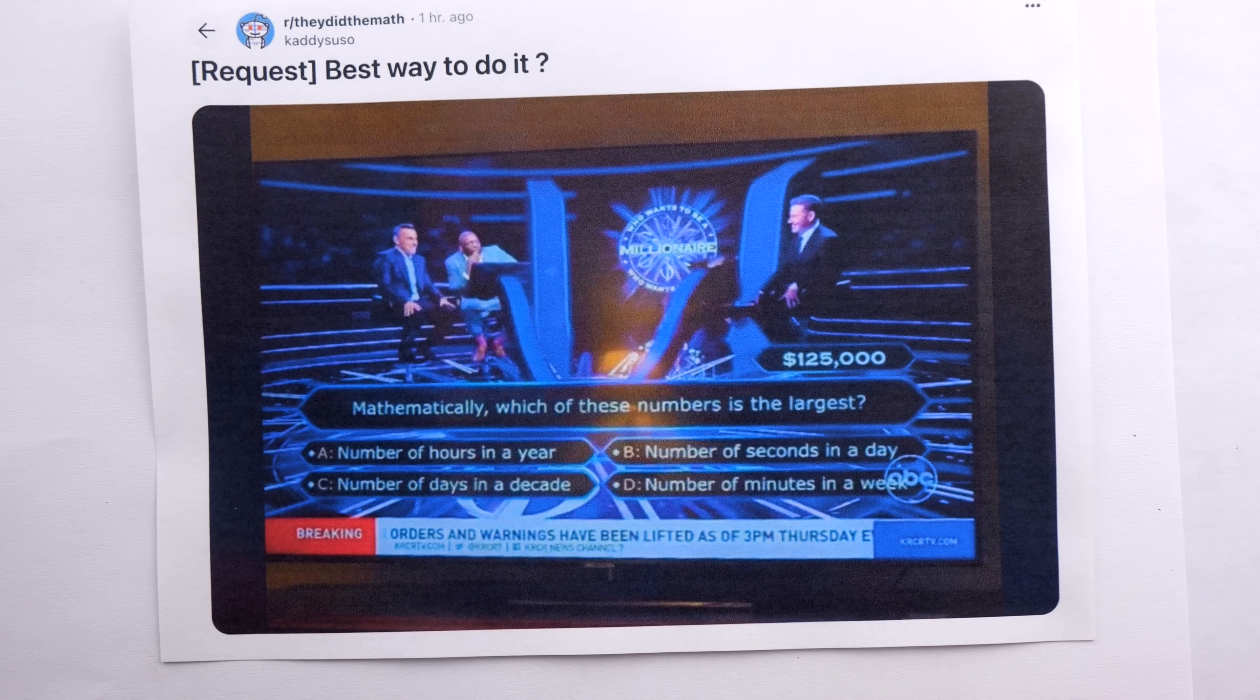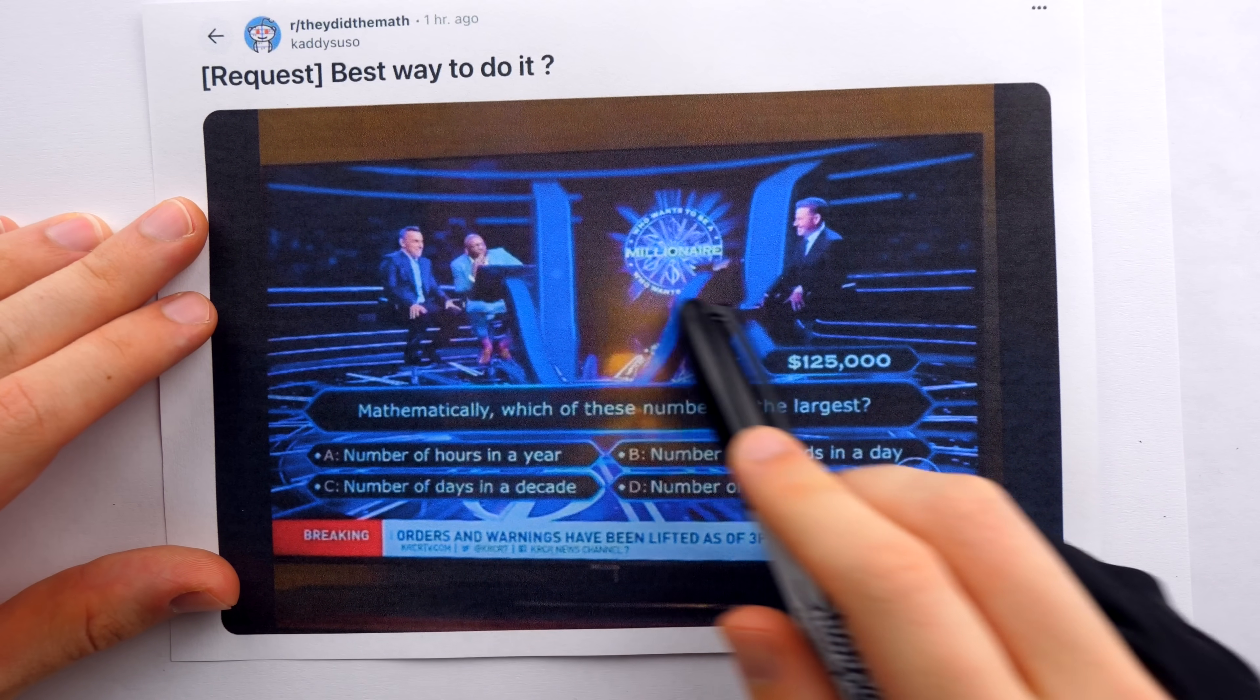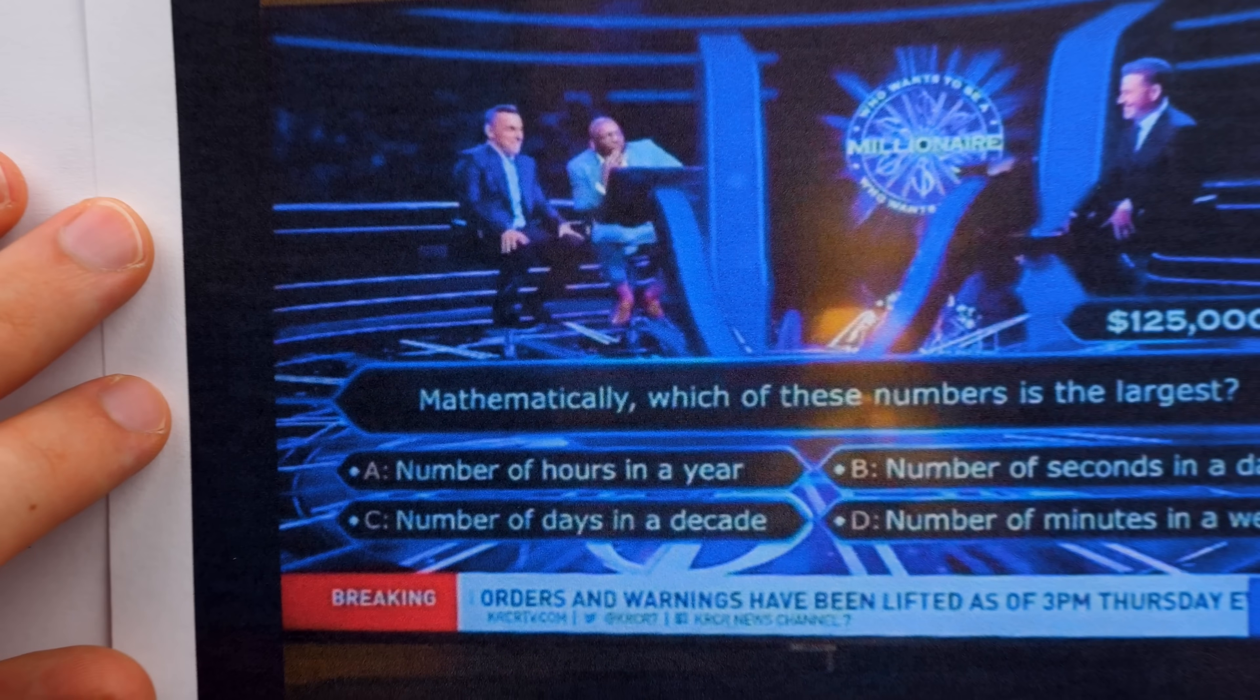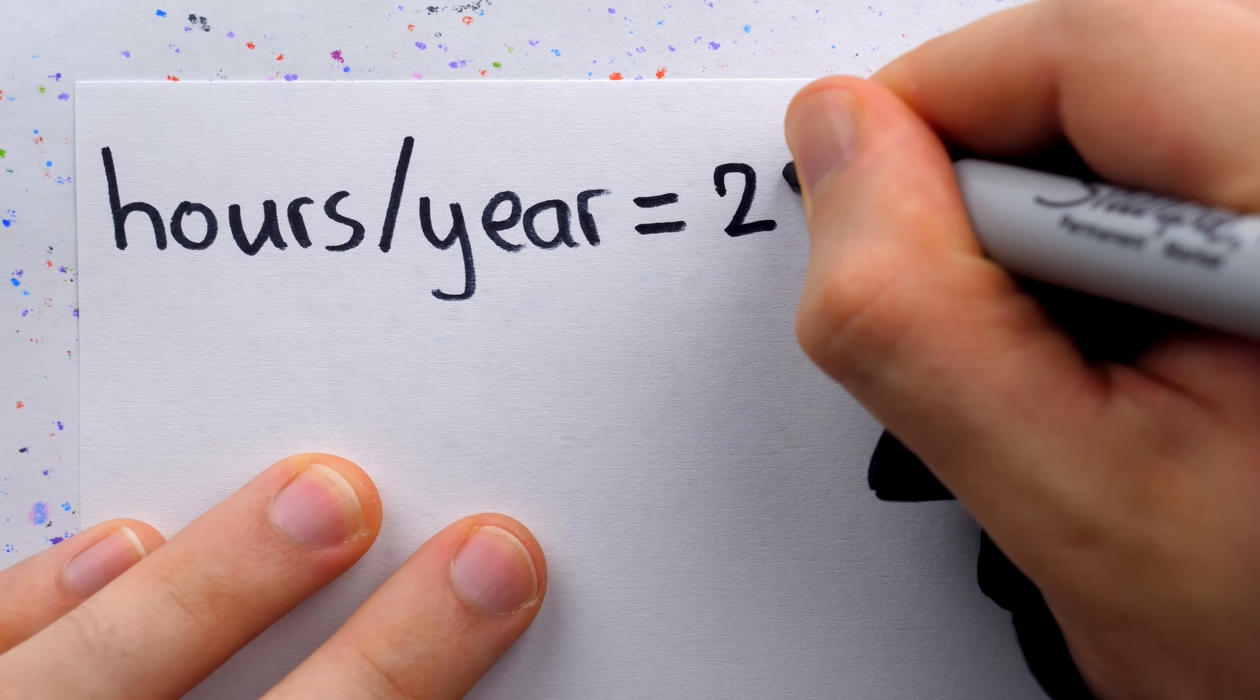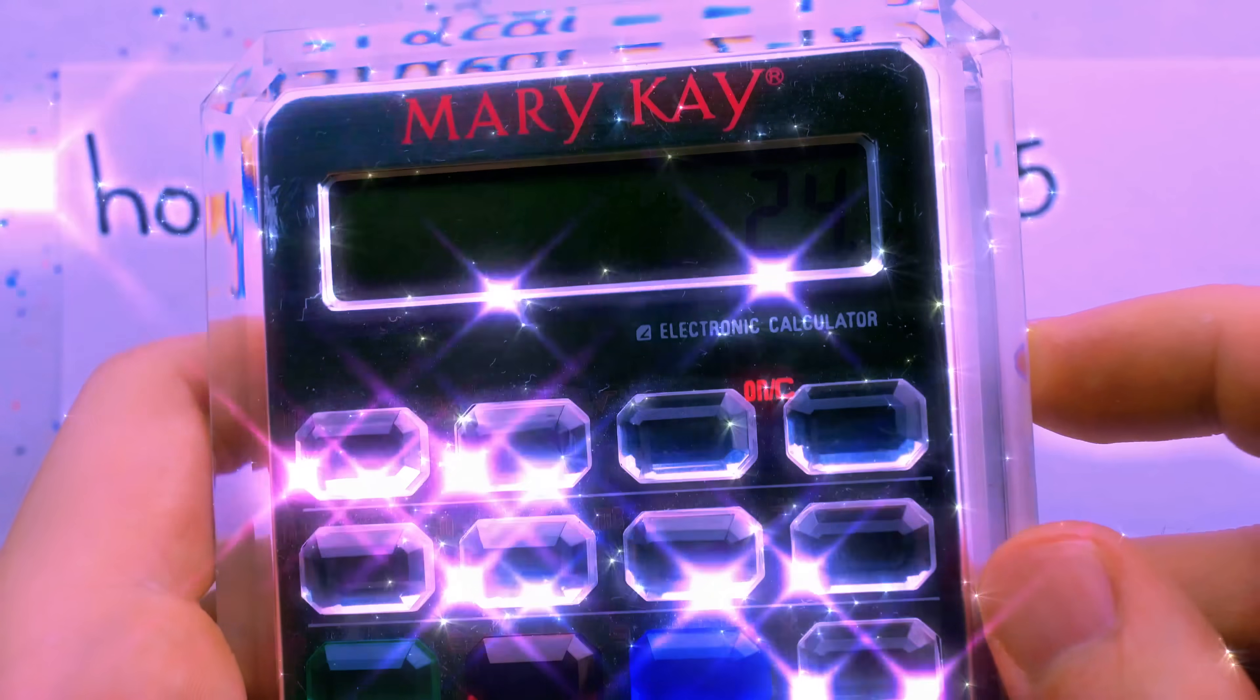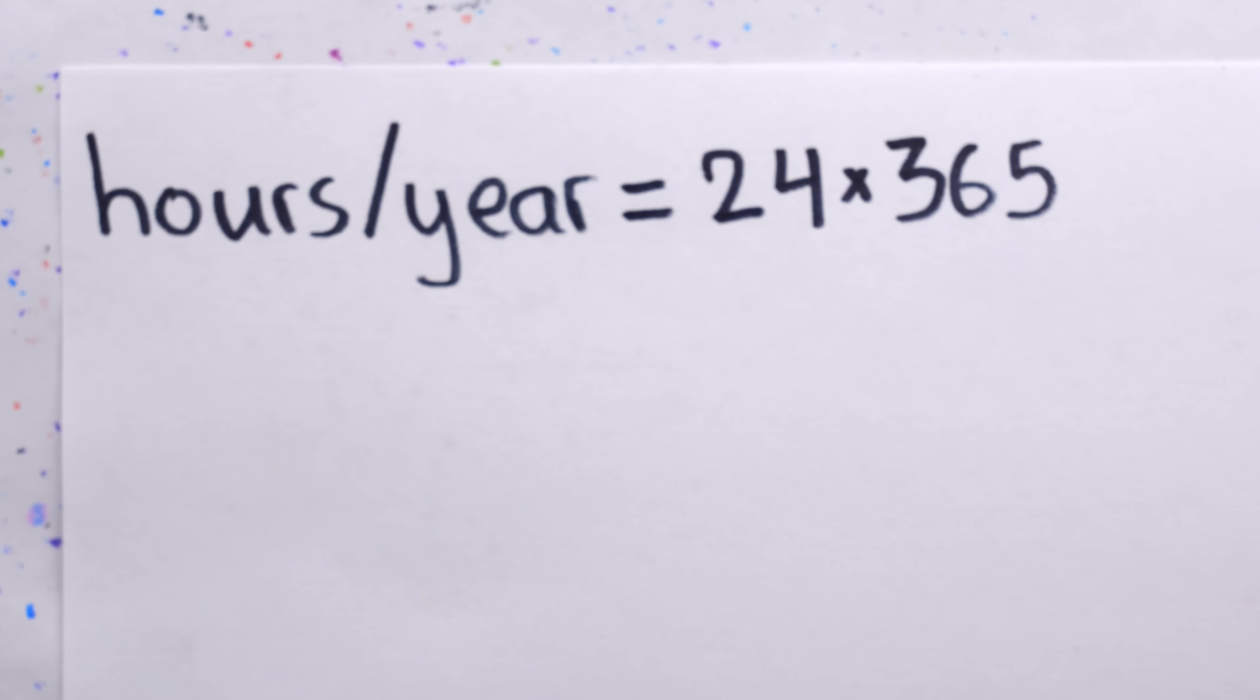Of course, if you have pencil, paper, ample time, and even a calculator, this should be a very easy question to answer. Which number is biggest? Well, letter A is the number of hours in a year. To find the number of hours in a year, we can just take the number of hours in a day, 24, multiply that by the number of days in a year, 365, and doing the multiplication, we see that this comes out to 8,760.